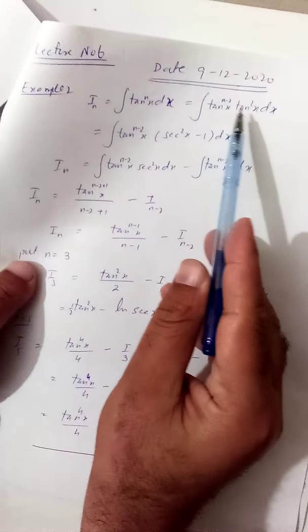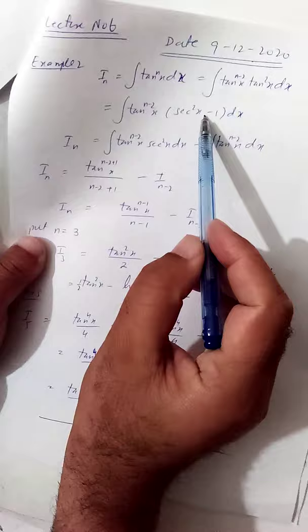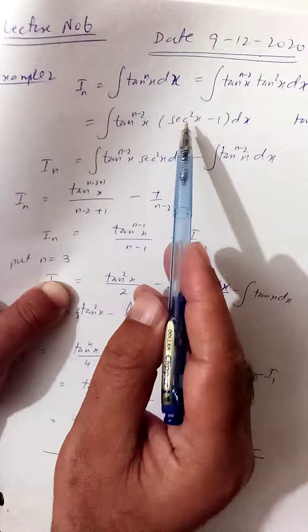We have the integral of tanⁿ⁻²x · tan²x dx. Here tan²x can be written as sec²x minus 1, because we know that tan²x + 1 = sec²x, from which we can write sec²x minus 1. Multiplying out gives tanⁿ⁻²x · sec²x minus tanⁿ⁻²x dx.